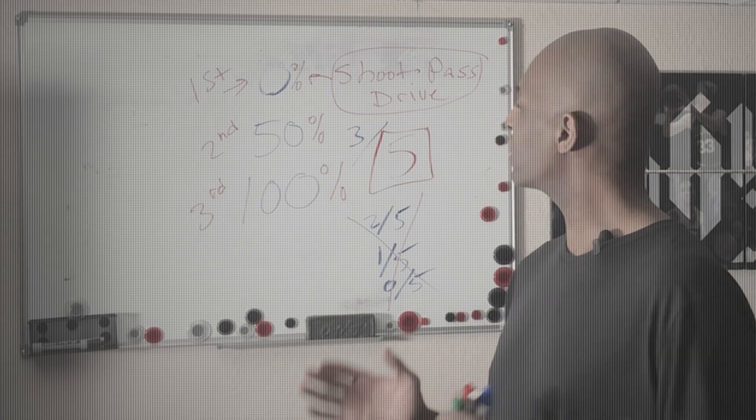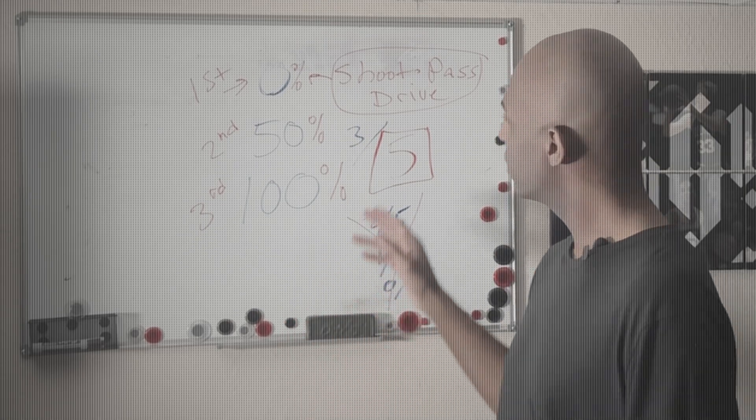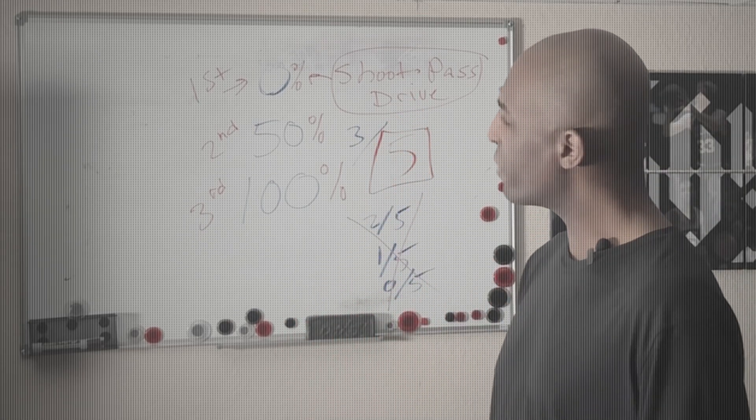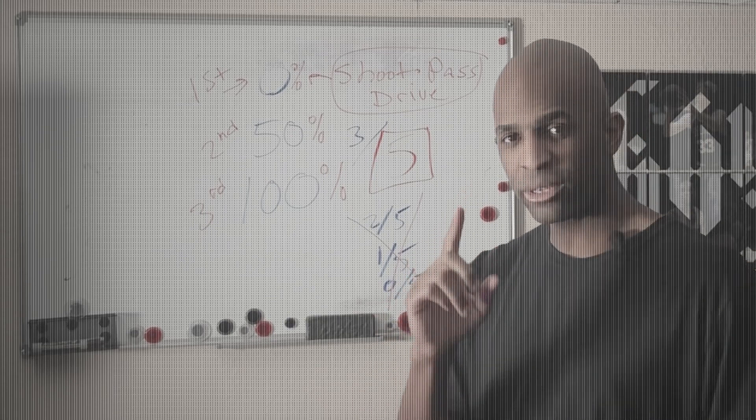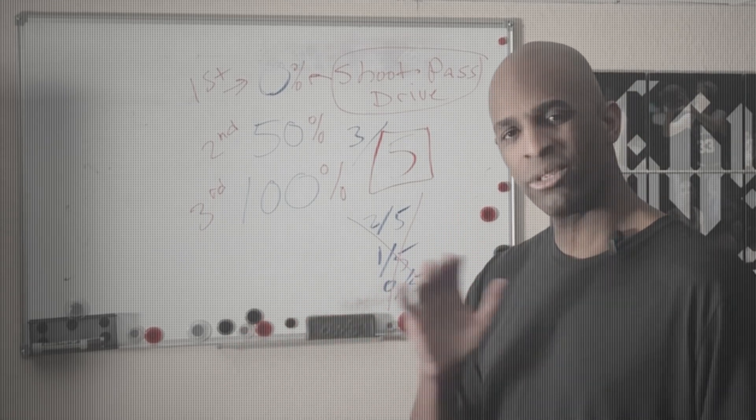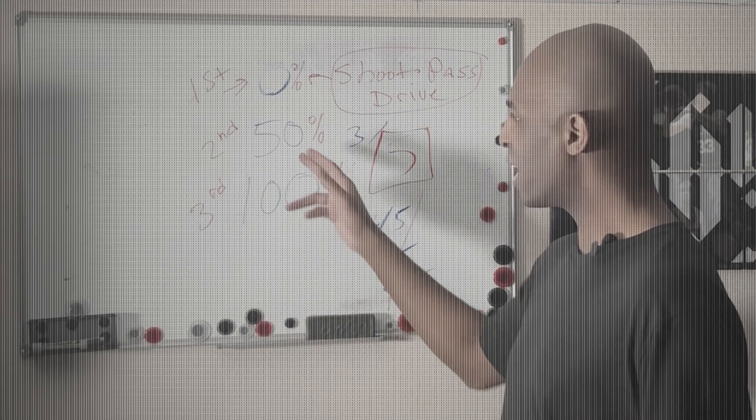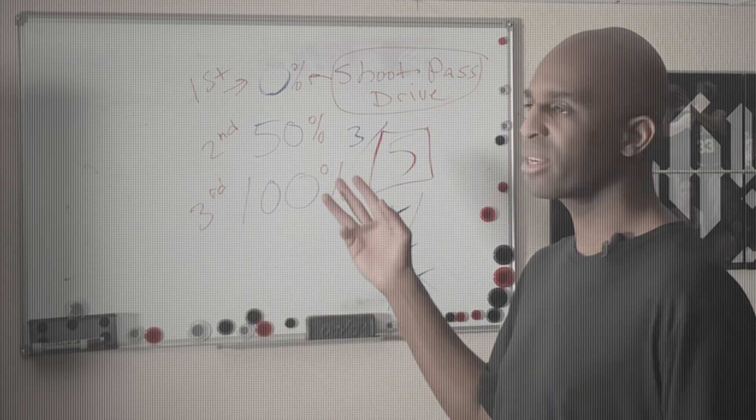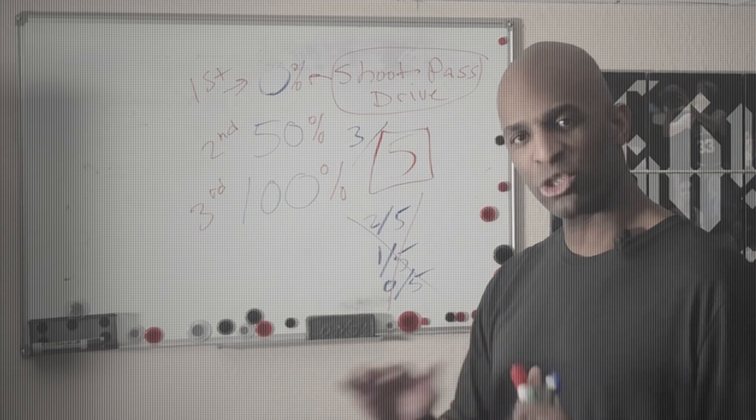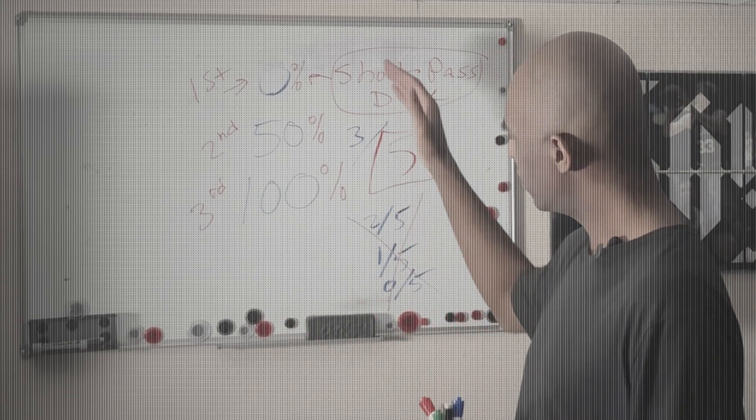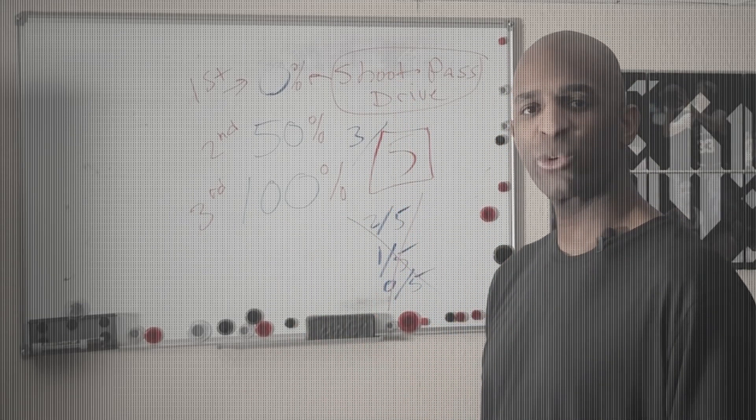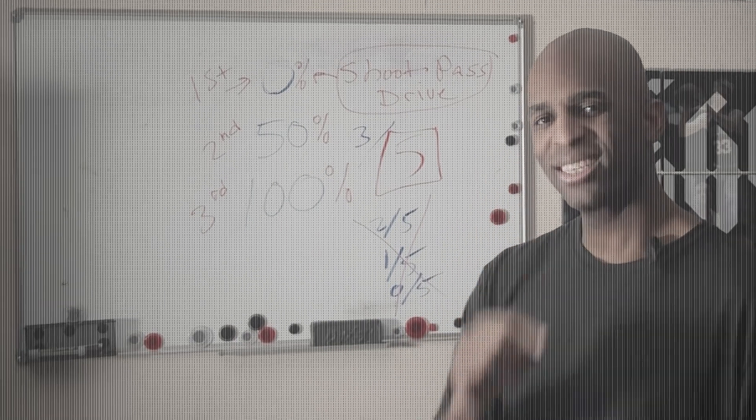You will get the greatest shots ever if you can be patient. So this is our rule: 0-50-100. The first time that you touch the ball, don't shoot, drive, or pass. Just swing the ball. Second time, 50% of the time do one of those three things. Third time, 100%. You can be a great basketball player and have a great team. 0-50-100. Thanks.